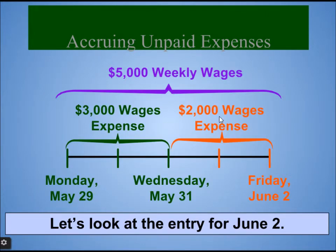Accruing unpaid expenses: on June 2nd, which is the pay period, the $3,000 wage is paid. This entry reverses the accrued wage expense that was recorded on May 31st.